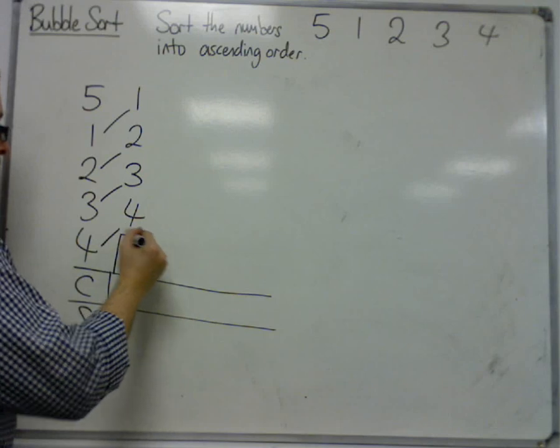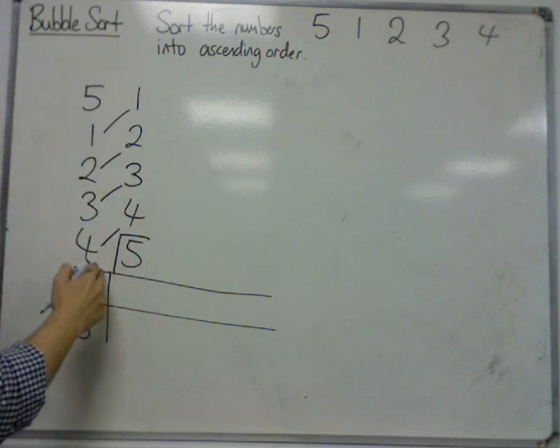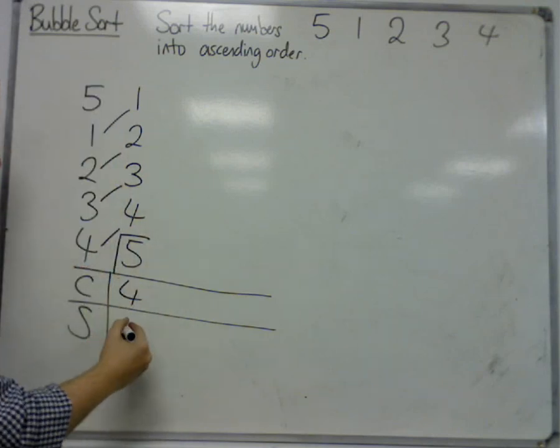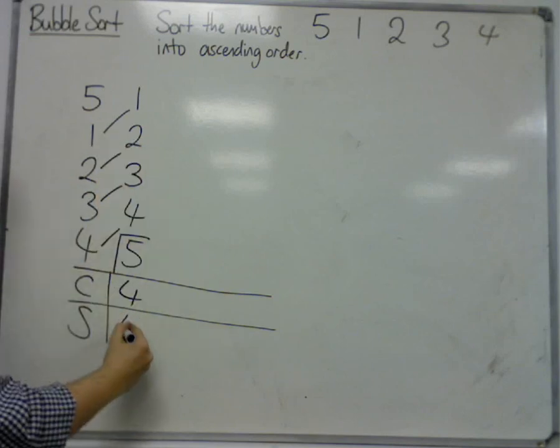So I can box off the 5, and there were 5 numbers, so I made 4 comparisons, and I can see I made 4 swaps.